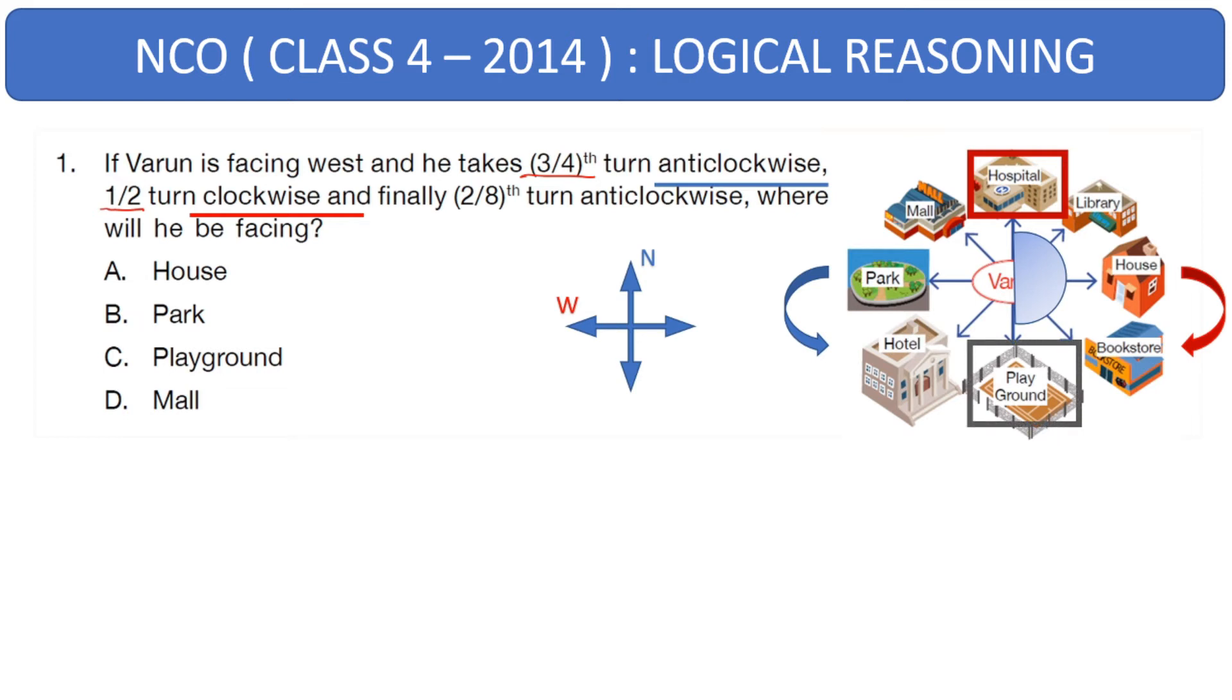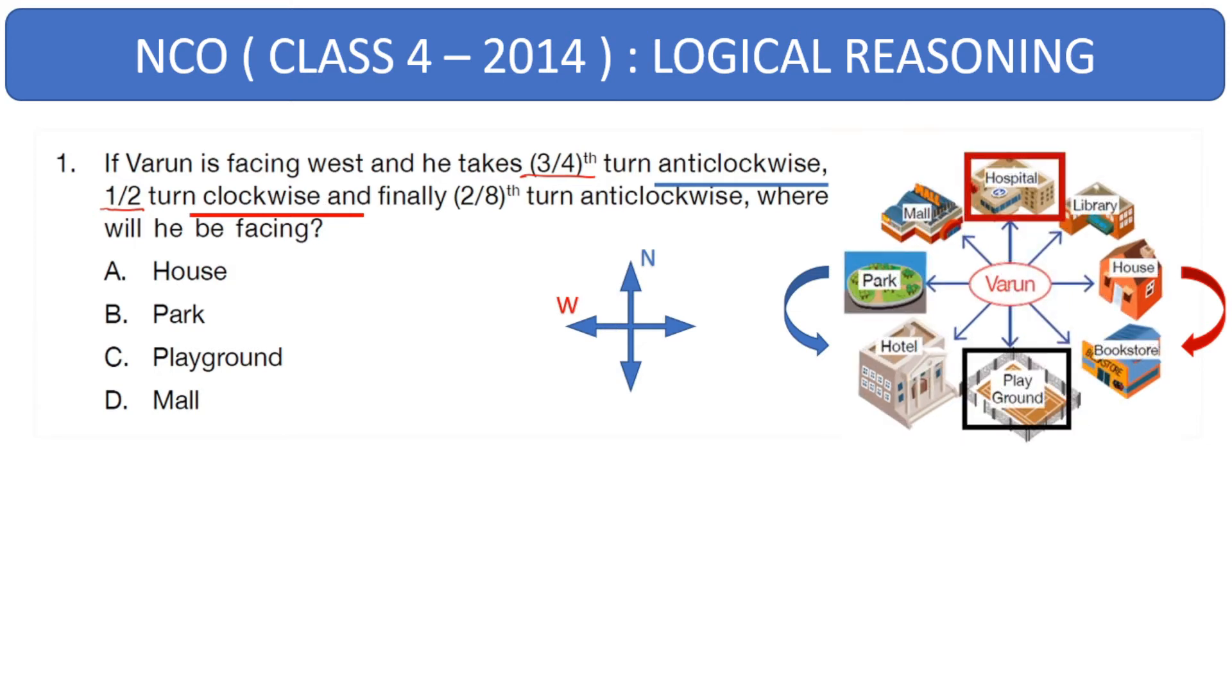Now let's go to the third and final part of the question which is from the playground. From the playground, 2/8th turn anti-clockwise. We know that anti-clockwise is this direction. Now 2/8th, how will we come to that? We will draw a circle and divide it into 8 equal parts. With the spokes that are shown, we get 8 equal parts. And in the anti-clockwise direction, this will give us 2/8th. That means house is where we land up after covering 2/8th of direction. Hence, our right answer is option A, house.